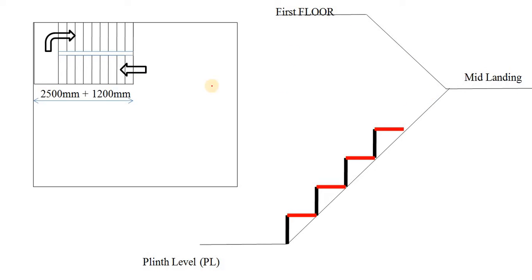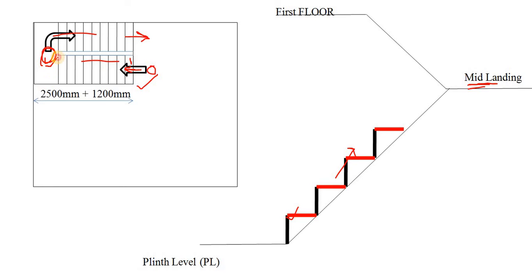Assume this is the stair of your home. This is the plan view — if you see from the top of your building, the stair looks like this. This is the start. First step — you go up, and here you take rest. This part is known as mid landing. In the elevation view, this is the main landing. You go up and take rest here because this is provided at the middle of the height from ground floor to first floor. Then you take a turn and go up to reach the next floor.